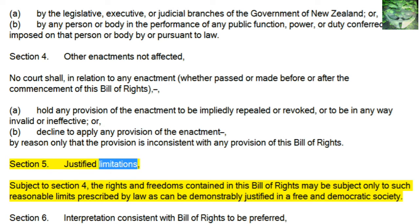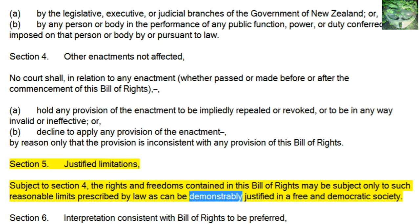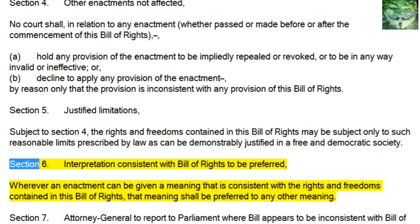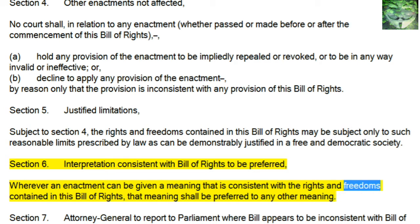Section 5, Justified Limitations: subject to Section 4, the rights and freedoms contained in this Bill of Rights may be subject only to such reasonable limits prescribed by law as can be demonstrably justified in a free and democratic society. Section 6, Interpretation consistent with Bill of Rights to be preferred: wherever an enactment can be given a meaning that is consistent with the rights and freedoms contained in this Bill of Rights, that meaning shall be preferred to any other meaning.